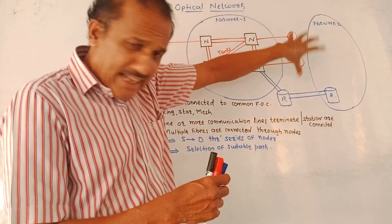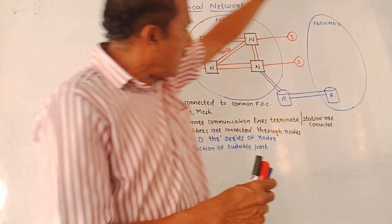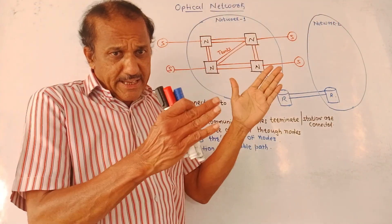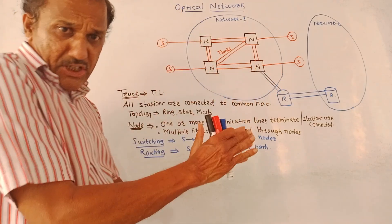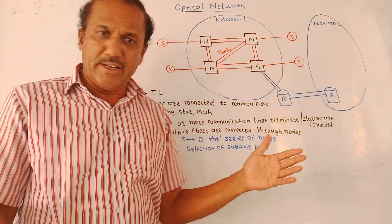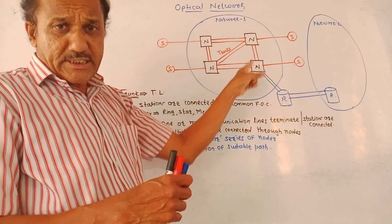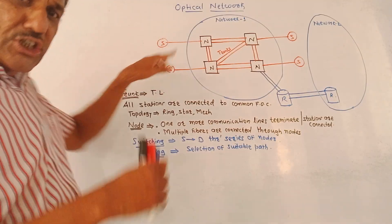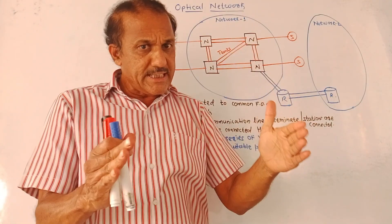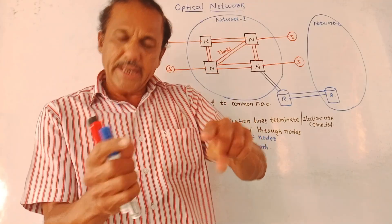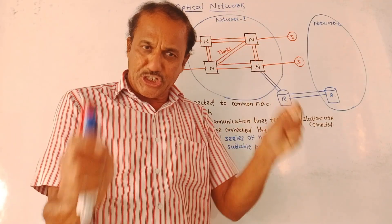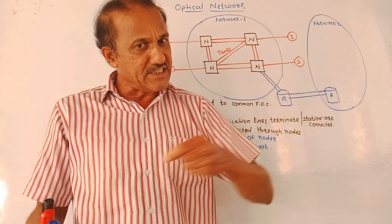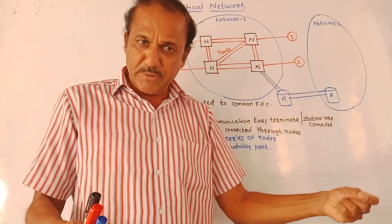This diagram shows two optical networks — network 1 and network 2 — illustrating the different elements used in an optical network. S represents the station, which can be a transmitting station or a receiving station. A transmitting station, as the name indicates, transmits the information and data.